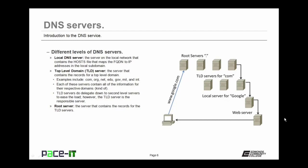Then there are top level domain servers — TLD servers. These contain the records for the top level domains — examples include .com, .org, .net, .edu, and so forth. Each of these servers contains all of their information for their respective domains. The TLD servers do delegate down to second-level servers to ease the load, but the TLD server is responsible for maintaining the record. Then there's the root server — the server that contains all of the records for the TLD servers. If you're looking for a TLD that is unknown, you go to the root server, which will pass you onto the appropriate TLD.